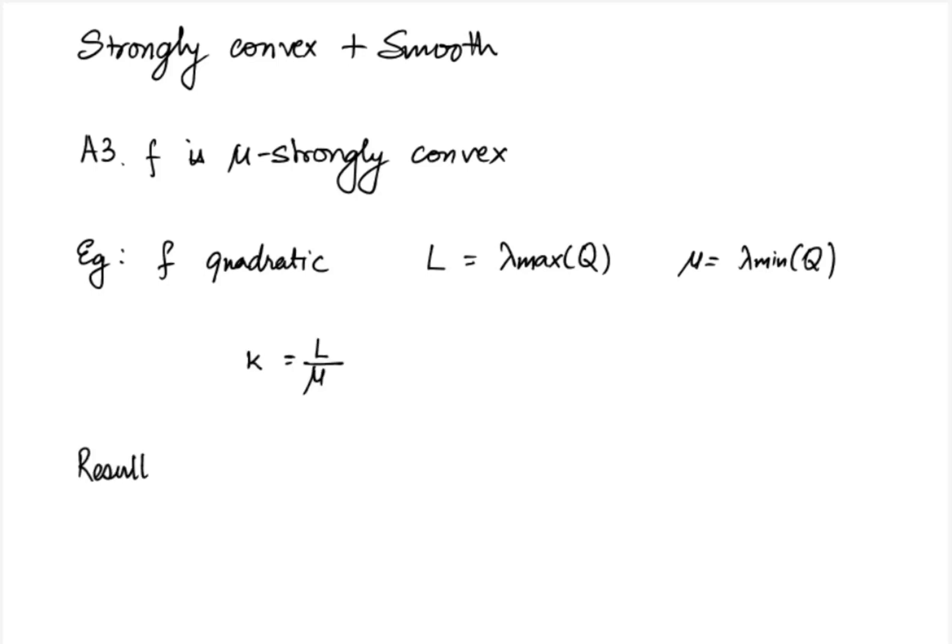The result that we have is as follows. Under assumptions a2 and a3, which is that for l smooth and mu strongly convex functions, the oracle complexity is given by order kappa log b by epsilon for eta equal to 2 by l plus mu.